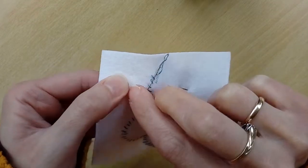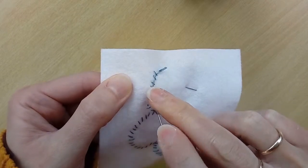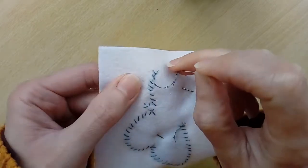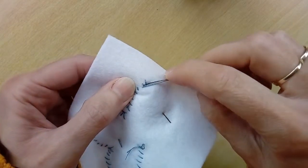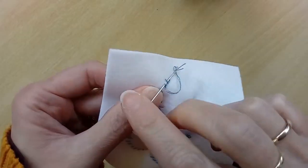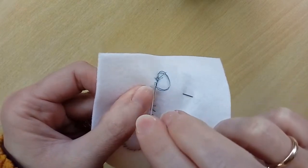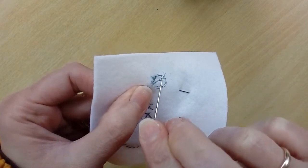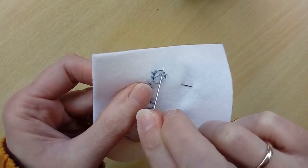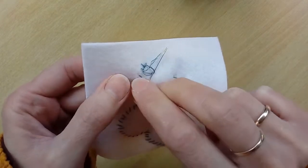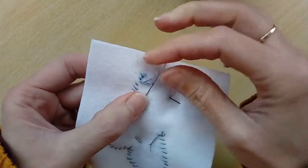You might want to leave a little bit more thread than I have here, makes it a little bit awkward with such a small amount of thread. Then you want to go through them again and as you bring it through, just put the head of the needle through the loop that you're making.